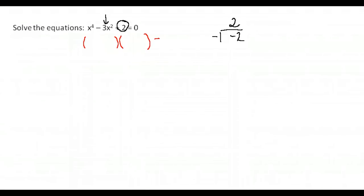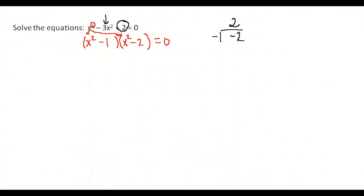Now be careful when you set up your parentheses. We're splitting not an x squared but an x to the fourth, so when we split it into two factors, we cut it in half — we get x squared in each parenthesis instead of just x. So our factors are x squared minus 1 and x squared minus 2. We set each factor equal to zero and solve.